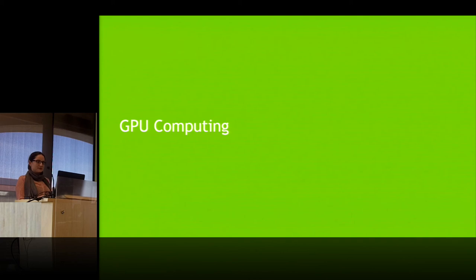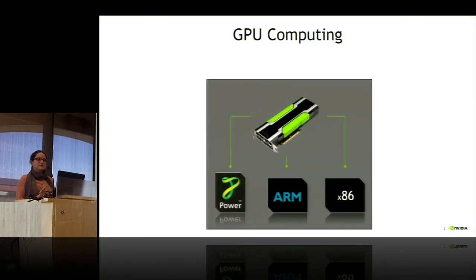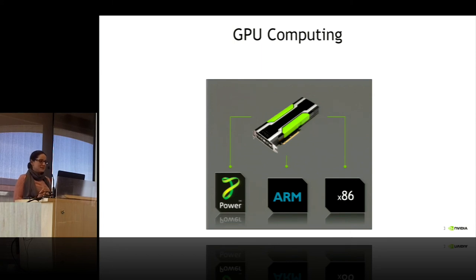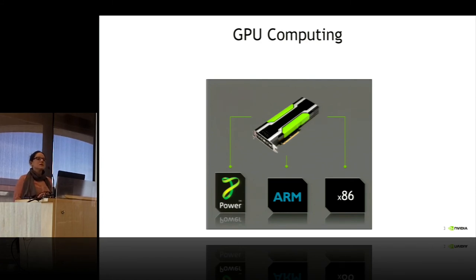Some vocabulary so that we're all on the same page: GPU computing is computing on the GPU. The GPU has to be attached to something — that something can be a Power, ARM, or x86. The only reason I'm saying that is that this used to be a constraint, and NVIDIA tries to make it not such a constraint for you as one might think.